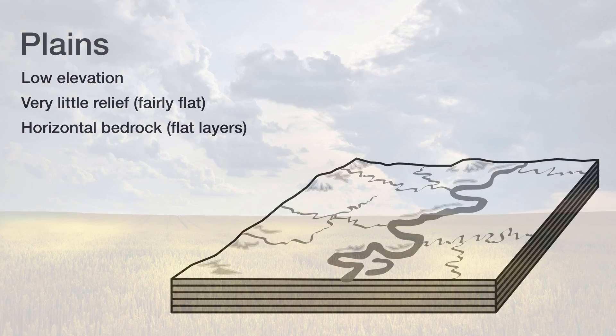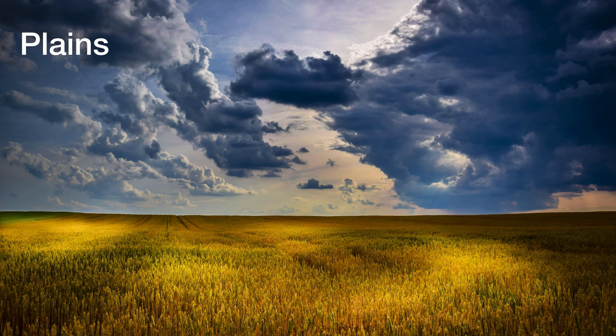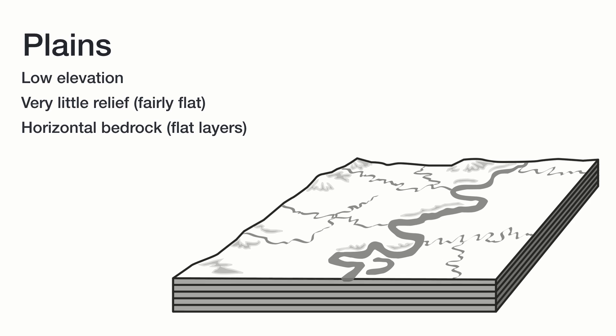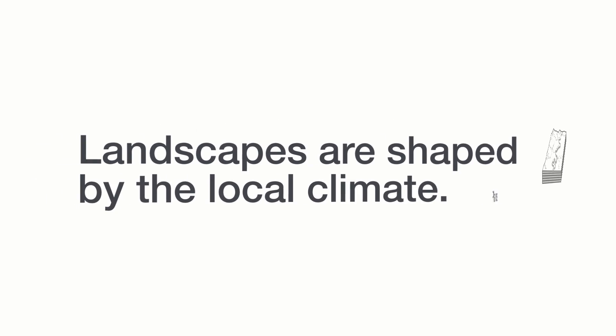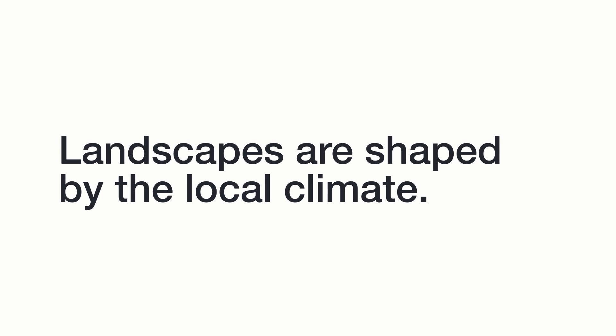Here's an example of a plain landscape. Notice very little relief, low elevation, and we can infer that the bedrock beneath is flat and horizontal. So those are our three types of landscapes — mountains, plateaus, and plains. But each of these landscapes can have a different appearance, and that's because they're largely shaped by the local climate.